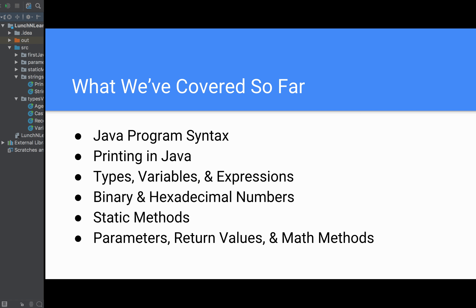So what we've covered so far: we've covered the Java program syntax, printing in Java, types, variables, and expressions, binary and hexadecimal numbers, static methods, parameters, return values, and math methods. We're going to use all of these things — except for maybe binary and hexadecimal numbers — in this review.